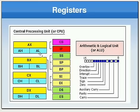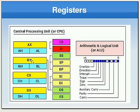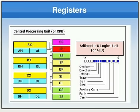Registers have a size, so you need a good idea of how they work. Let's take them one by one. AX is the accumulator register, BX is the base register, CX is the counting register, and DX is the data register. Then we have the instruction pointer register, stack pointer, base pointer, source index, destination index, and many more registers.